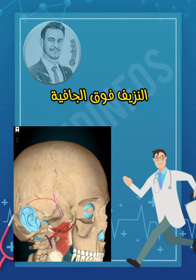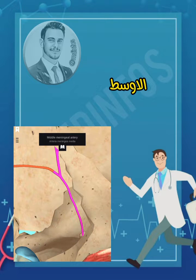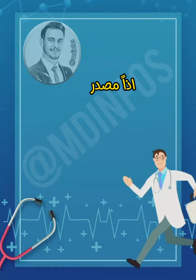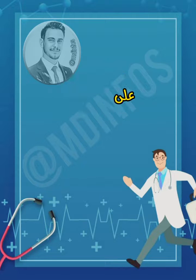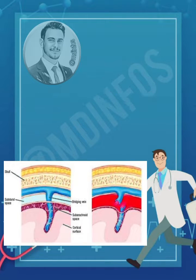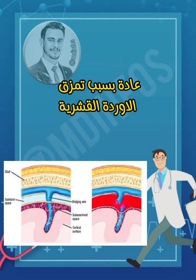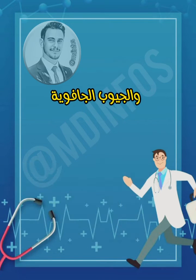Epidural hemorrhage is usually caused by damage to the middle meningeal artery due to temporal bone fracture, so the source of bleeding is arterial. In cases of subdural hemorrhage, the source of bleeding is venous, usually due to laceration of the cortical veins or avulsion of the bridging veins between the cortex and dural sinuses.